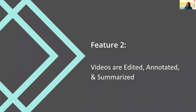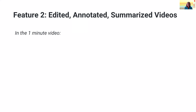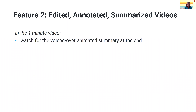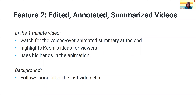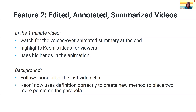We have animated summaries. In this one-minute video, watch for the voiced-over summary at the end. We do this to really highlight the talent's ideas for the viewers, but we try to stay close to their ideas — we actually even use Keone's hand in the animation. This clip comes soon after the video you just watched, and now he seems to be paying more attention to the definition and correctly uses it to create a new method to place two more points on the parabola.